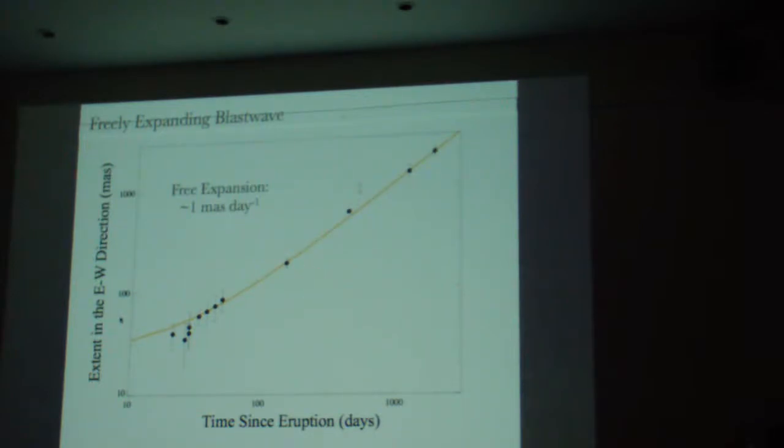And it entrains material from the red giant that never took part in the outburst. So you can't really infer the chemistry of the ejecta from the extended emission.